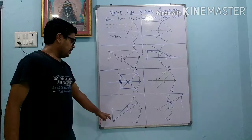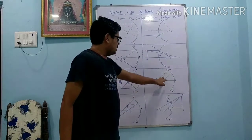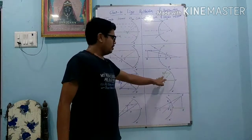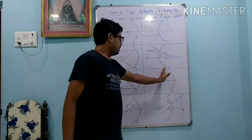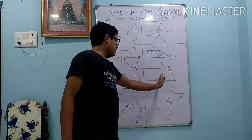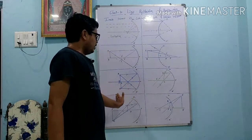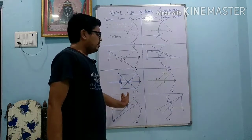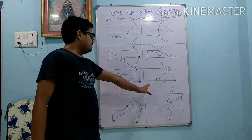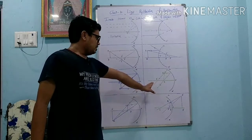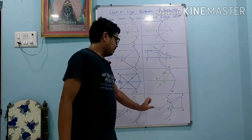The image is beyond the centre of curvature and it is a real and inverted image. If we keep the object on the principal focus, then after reflection the rays do not meet - the image is obtained at infinite distance. The size of the image is real and inverted, and it is a highly magnified image.